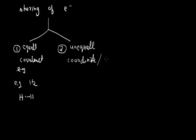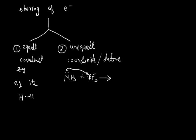Coordinate bonds are also termed as dative bonds. For example, NH3 plus BF3. Here, a lone pair exists on the nitrogen atom. The lone pair of the nitrogen atom is shared with the boron atom — sorry, the boron atom in BF3. The resulting bond is in NH3-BF3.